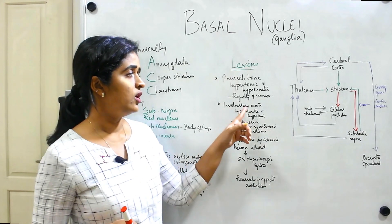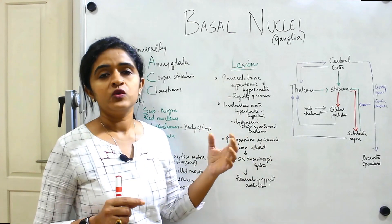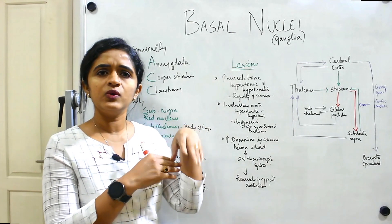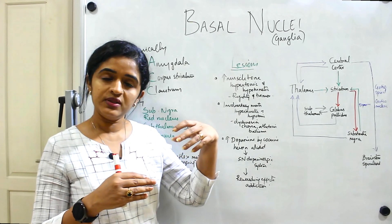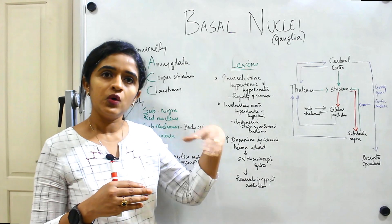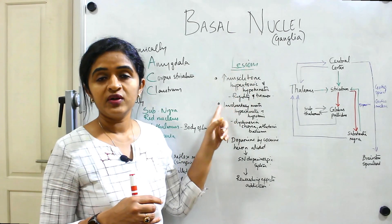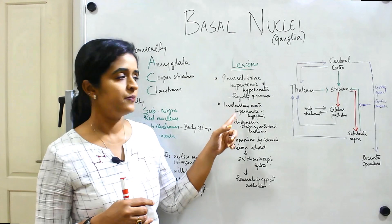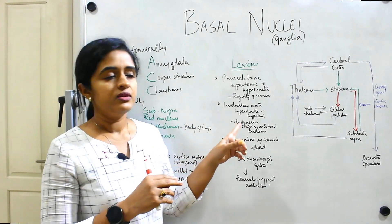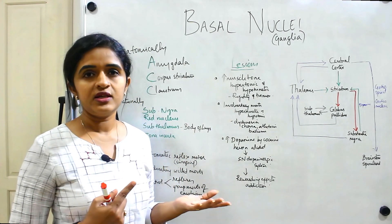The next symptom is involuntary movements — hyperkinetic movements. If there is no tone for the muscles, they just flail around. If there is increased tone, you get rigidity; if there is no tone, movements become hyperkinetic. So the second feature of basal nuclei lesions is involuntary hyperkinetic movements with loss of tone — hypotonia. These types of movements are known as dyskinesia, seen in chorea, athetosis, ballismus, etc.